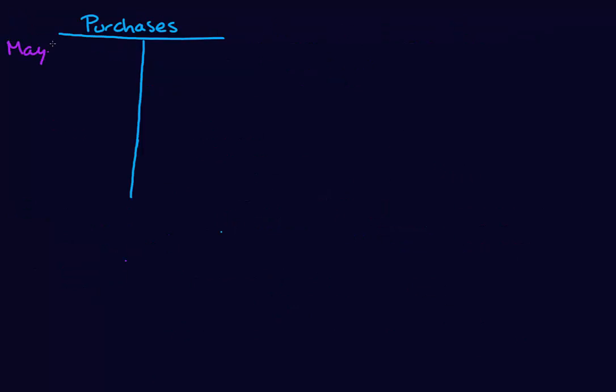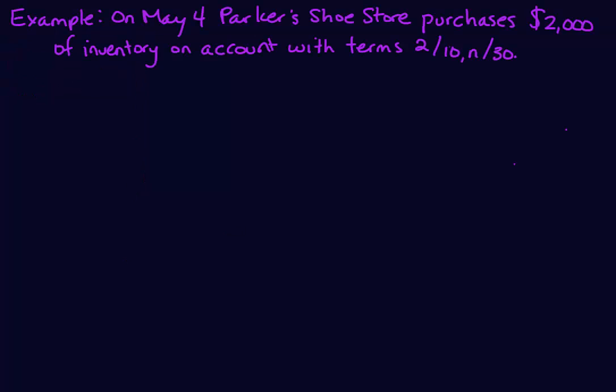Let's look at our T-account for Purchases. On May 1st we had a purchase for $1,000, and on May 2nd we also had a purchase for $500.